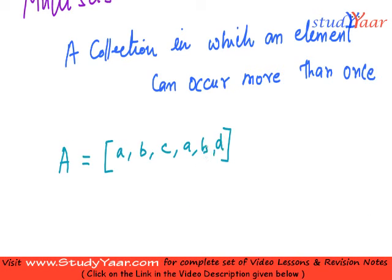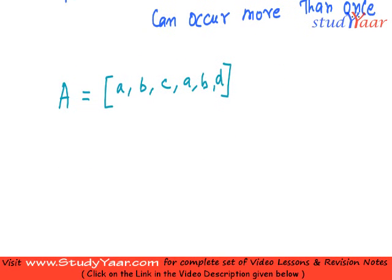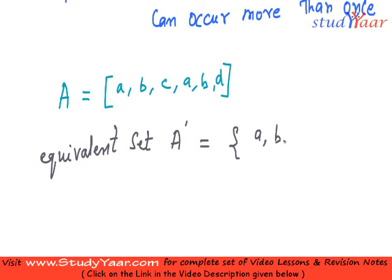The equivalent set of this multiset is going to be, let's suppose I write it as equivalent set, and let me call it as A dash. It is going to be a, b, c and d.